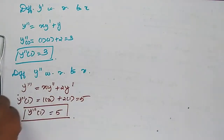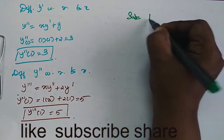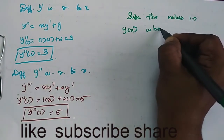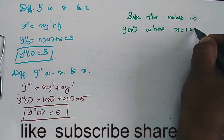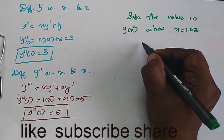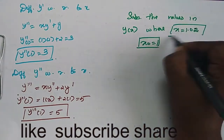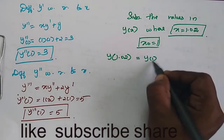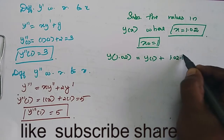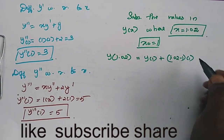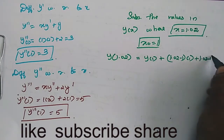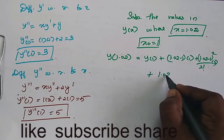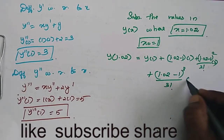Now substitute the values in y(x) where x is equal to 1.02. y(1.02) equals y(1) plus (1.02 minus 1) into 1 plus (1.02 minus 1)² by 2 factorial into 3 plus (1.02 minus 1)³ by 3 factorial into 5.